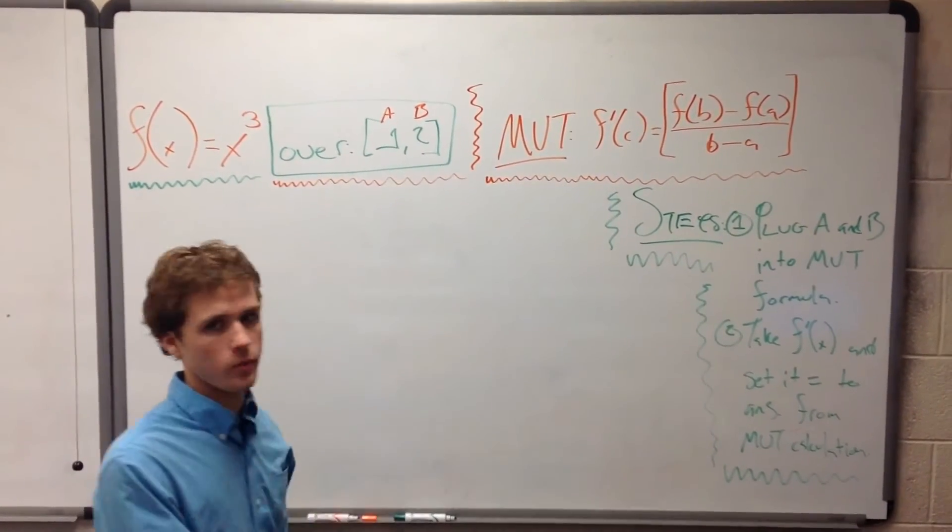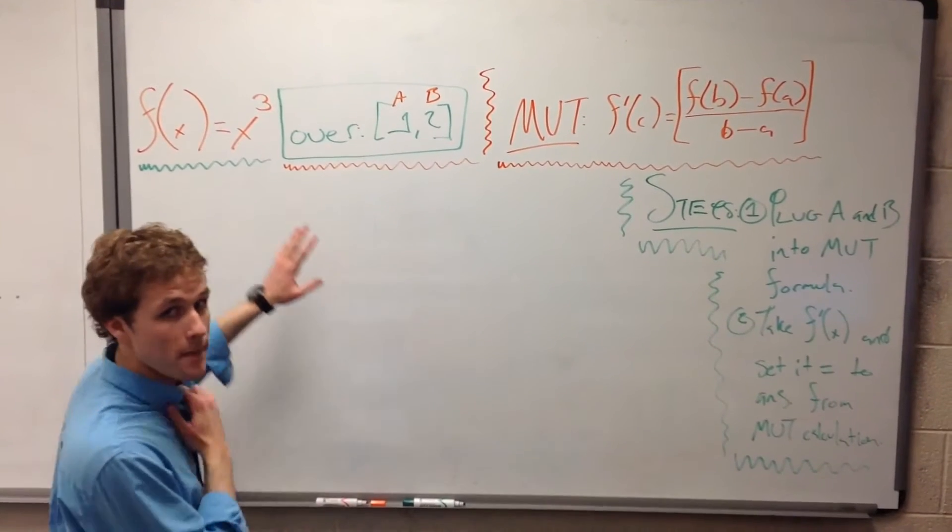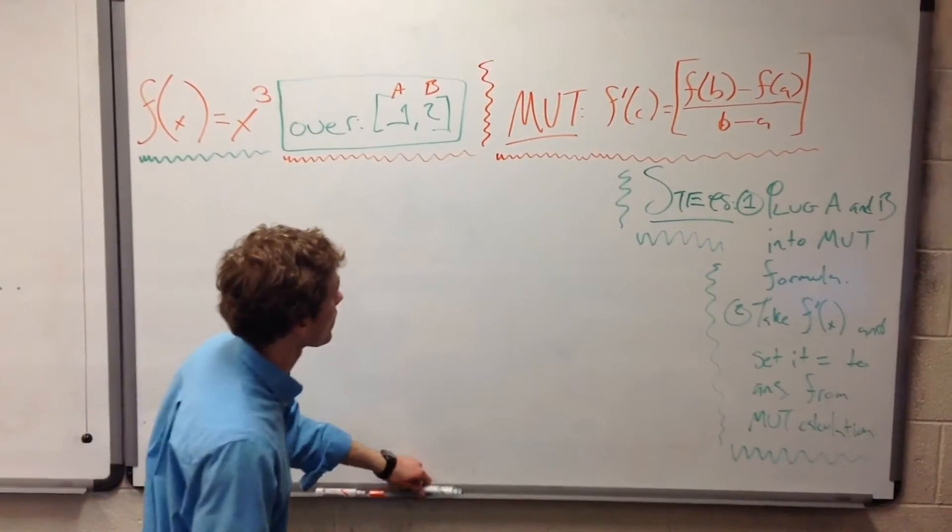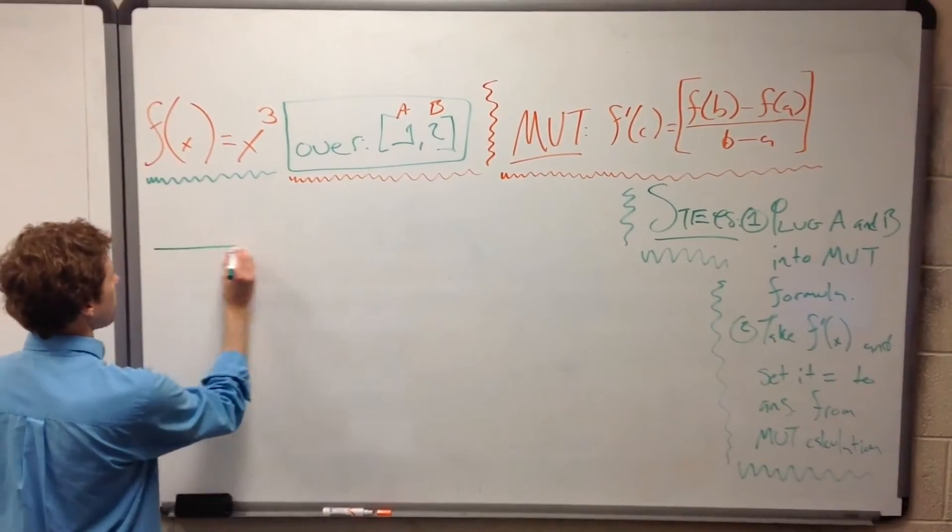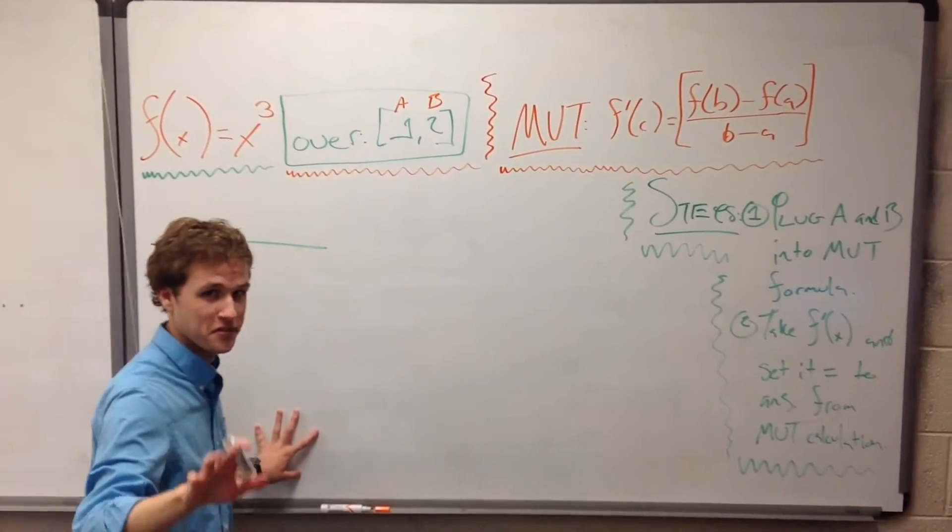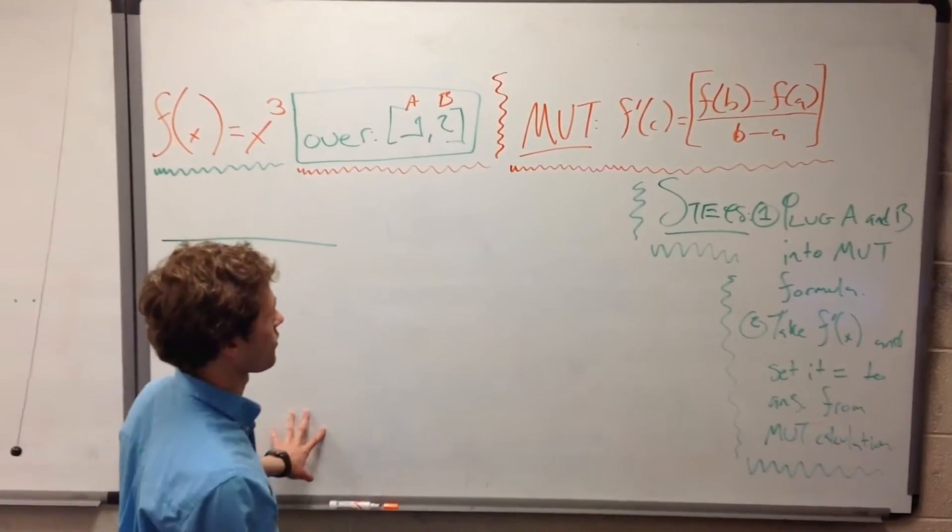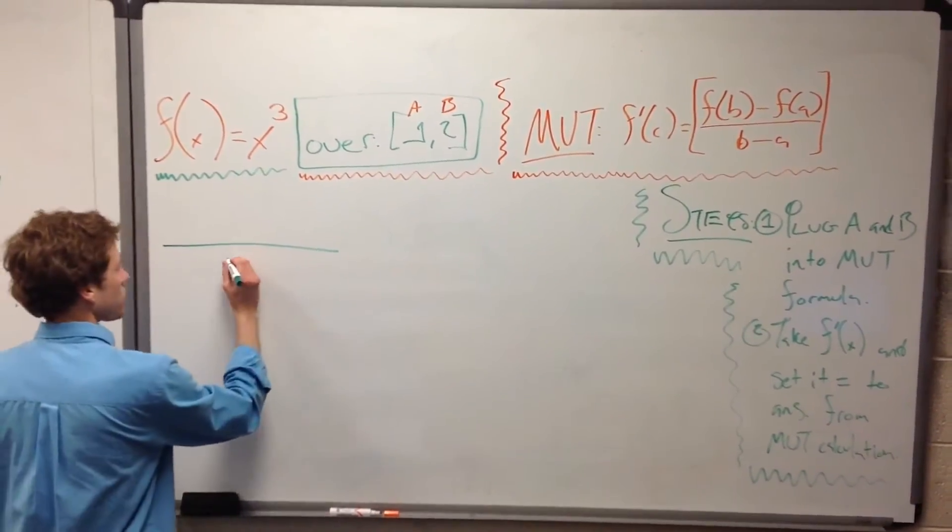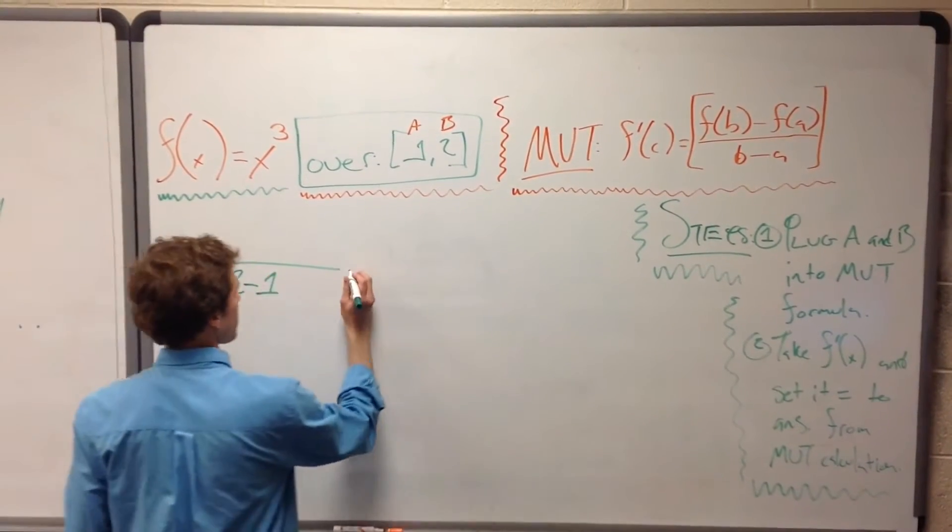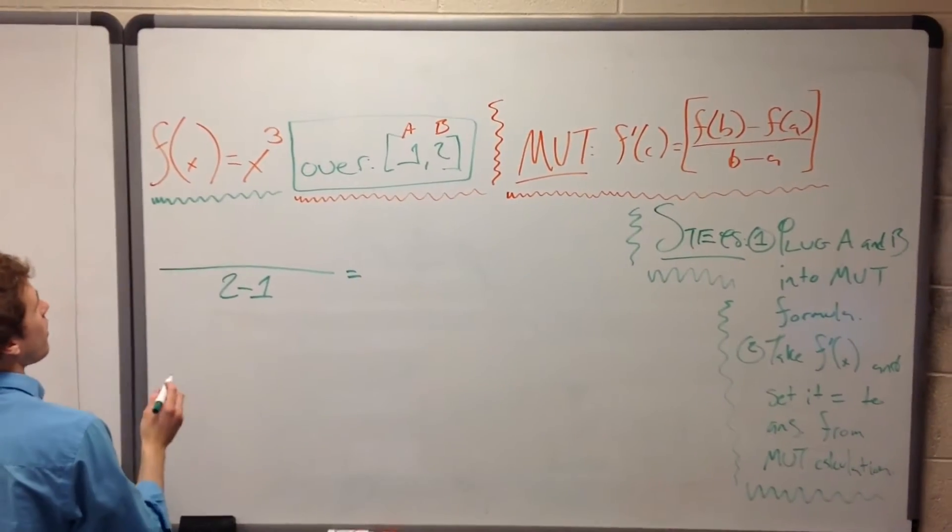We're using the original function here. We're not taking prime or doing anything. We're not messing with the function yet at this point. So the bottom, we're not taking prime, we're just plugging things into the mean value theorem. So the bottom is easy, B minus A, so it's just 2 minus 1. This shouldn't be giving anybody a headache, that kind of math.